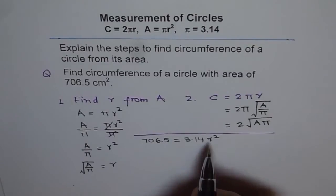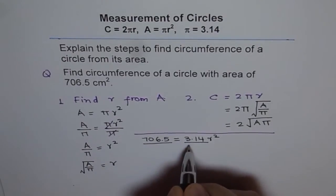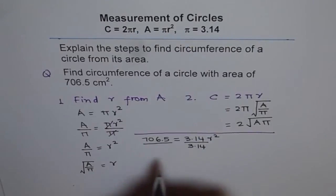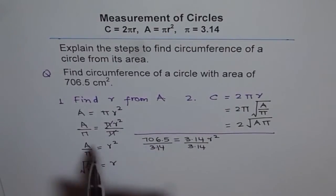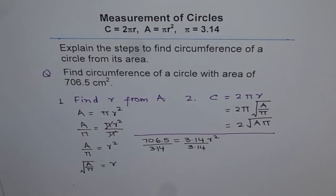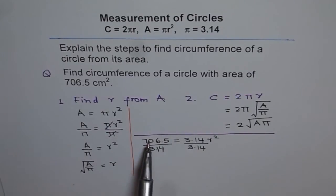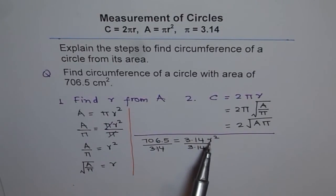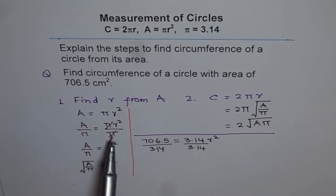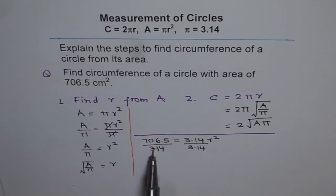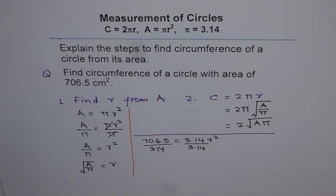To find r, we need to divide both sides by 3.14. Look at the steps we did earlier — we are following the same steps. So step number 1: 706.5 equals 3.14r². Step number 2: divide by π (which is 3.14) on both sides. Using a calculator, 706.5 divided by 3.14 gives us 225.